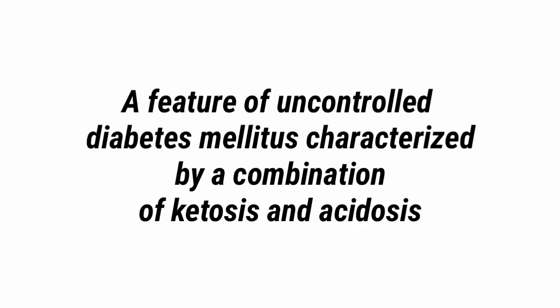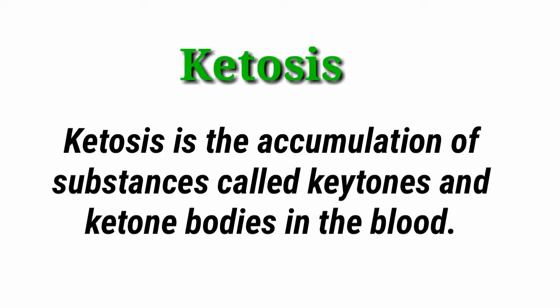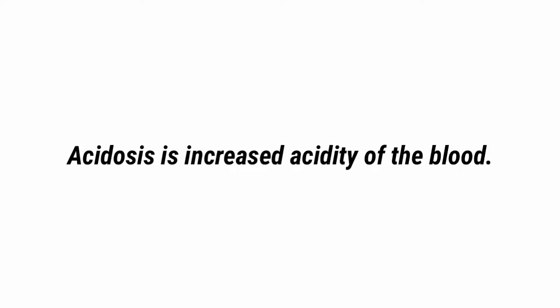Ketoacidosis is a feature of uncontrolled diabetes mellitus, characterized by a combination of ketosis and acidosis. Ketosis is the accumulation of substances called ketone bodies in the blood. Acidosis is increased acidity of the blood.